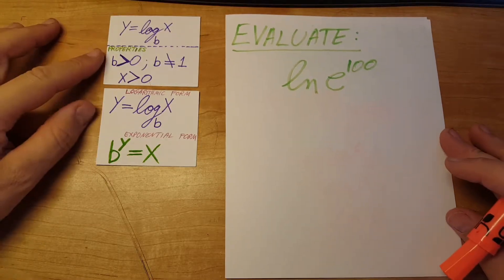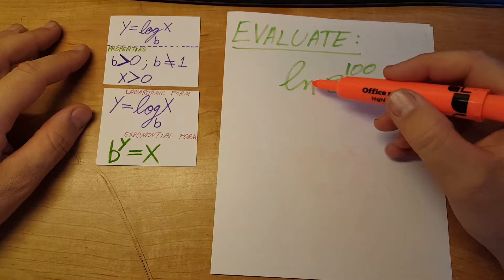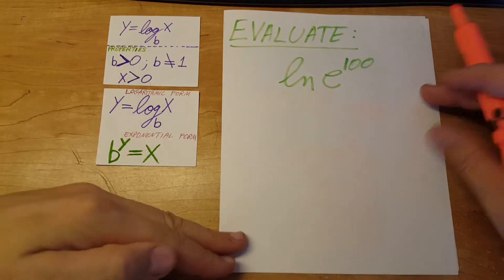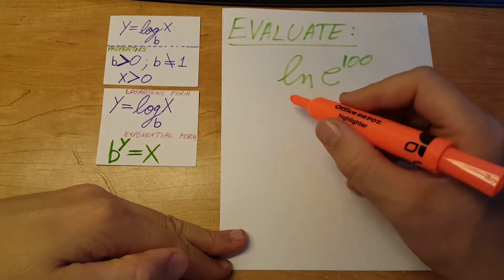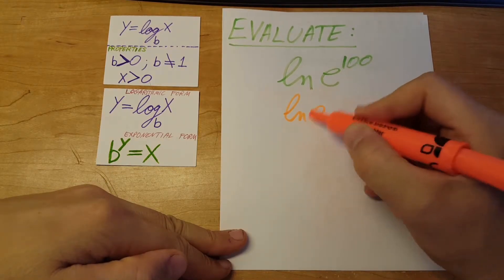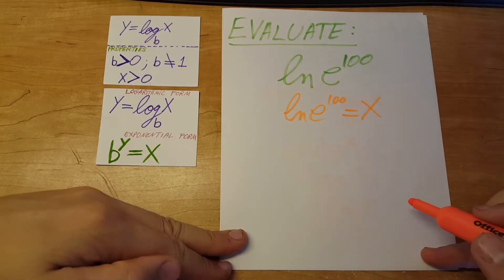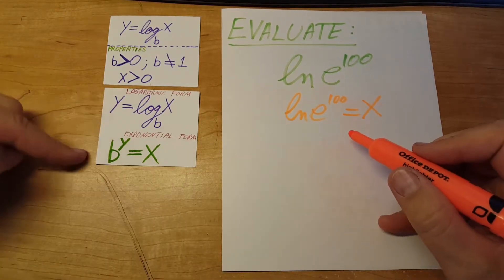This problem is asking us to evaluate the natural logarithm of e to the power of 100. We're going to put it equal to x: ln e to the 100 equals x. Now we're going to use these two formulas